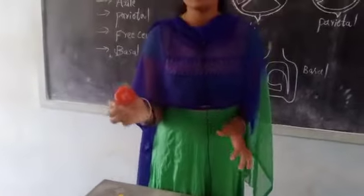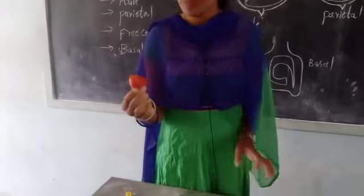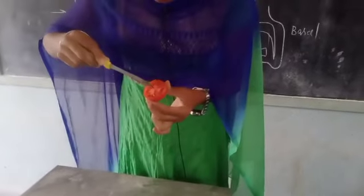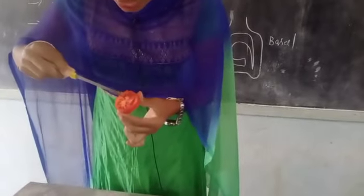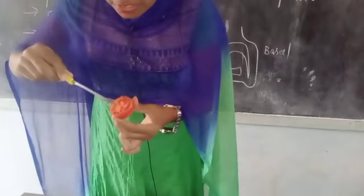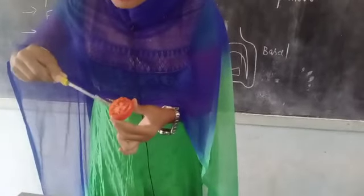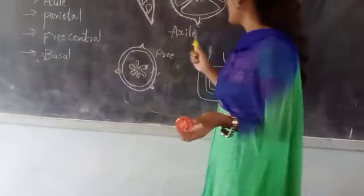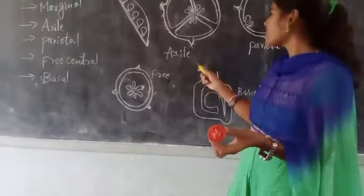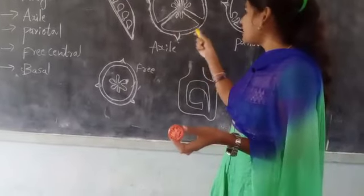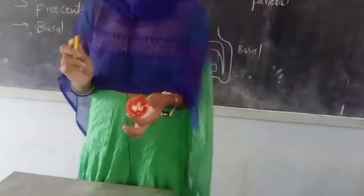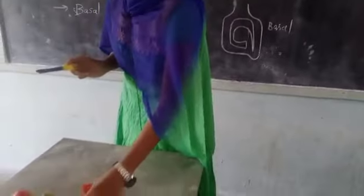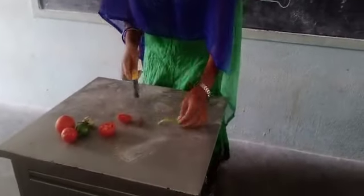When we cut a tomato, you can see there are some locules — some chambers. One, two, three. You are able to see that seeds are in the center. So we can consider tomato as an example of axial placentation. In axial placentation, there are chambers and the seeds are in the center. This is an example for axial placentation. Next, take the chili.